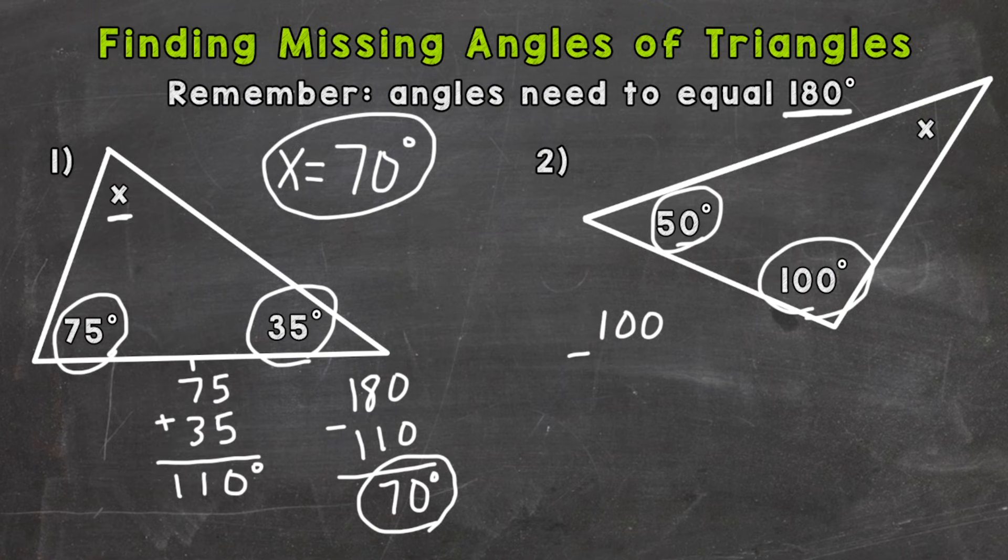So 100 plus 50 gives us 150 degrees. So now we need to do 180 degrees minus that 150 and it's going to give us our missing piece up here, that X.